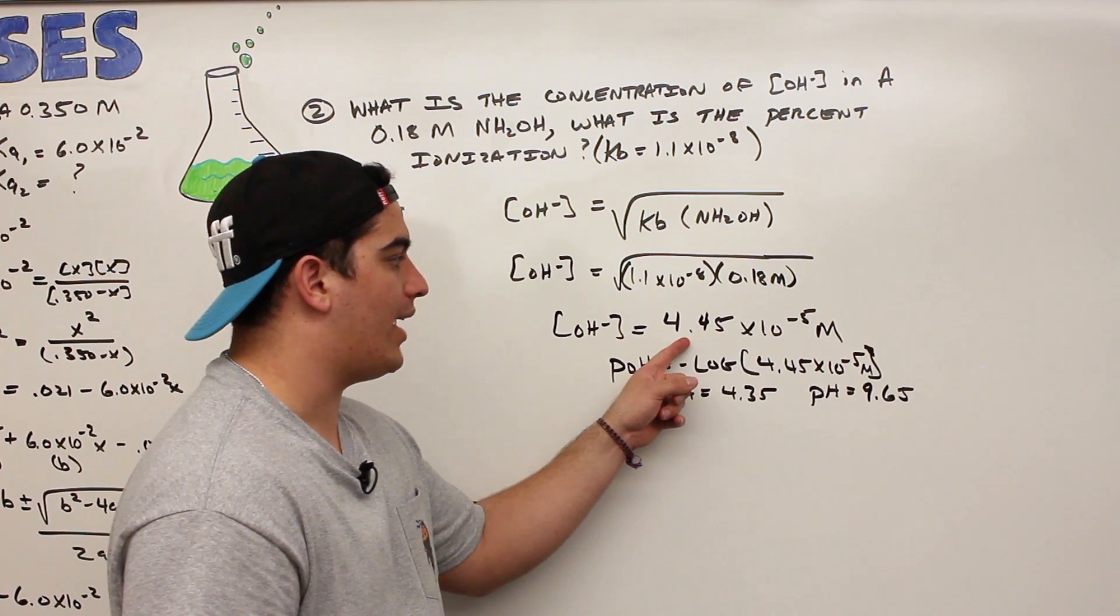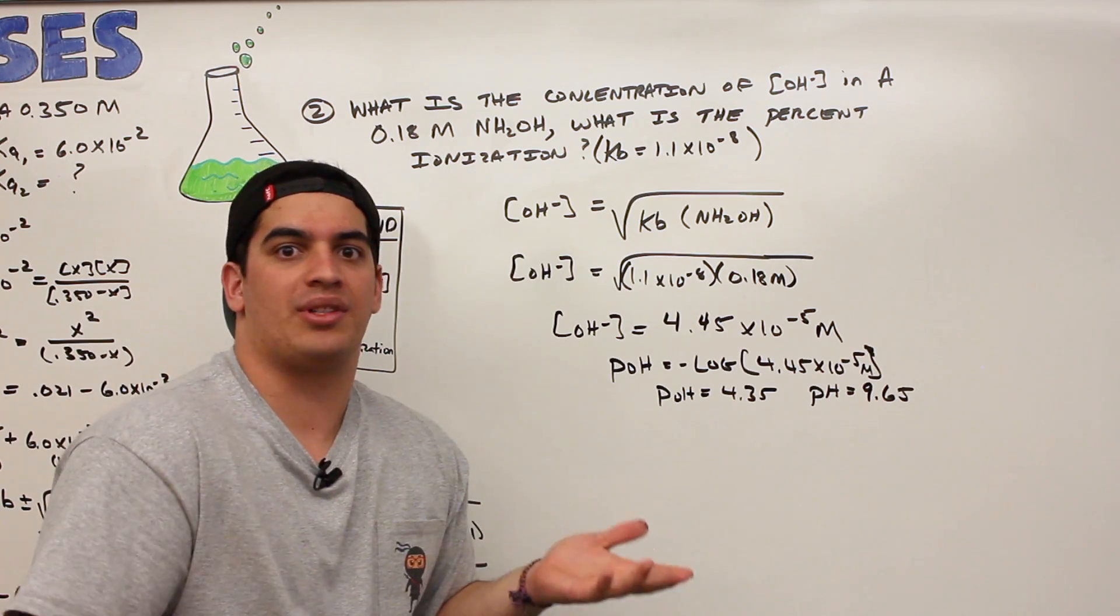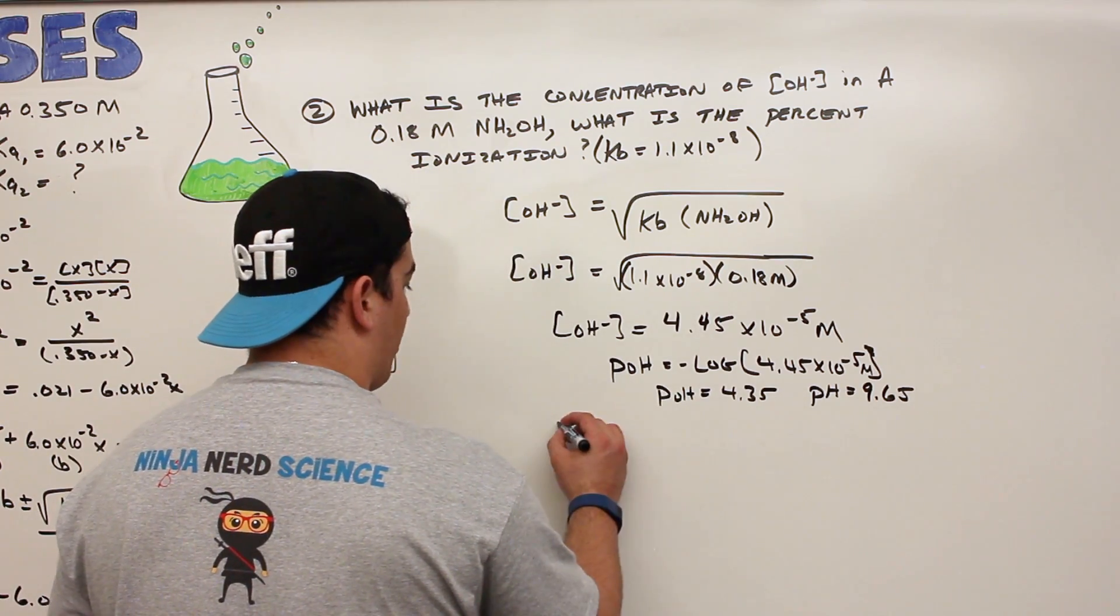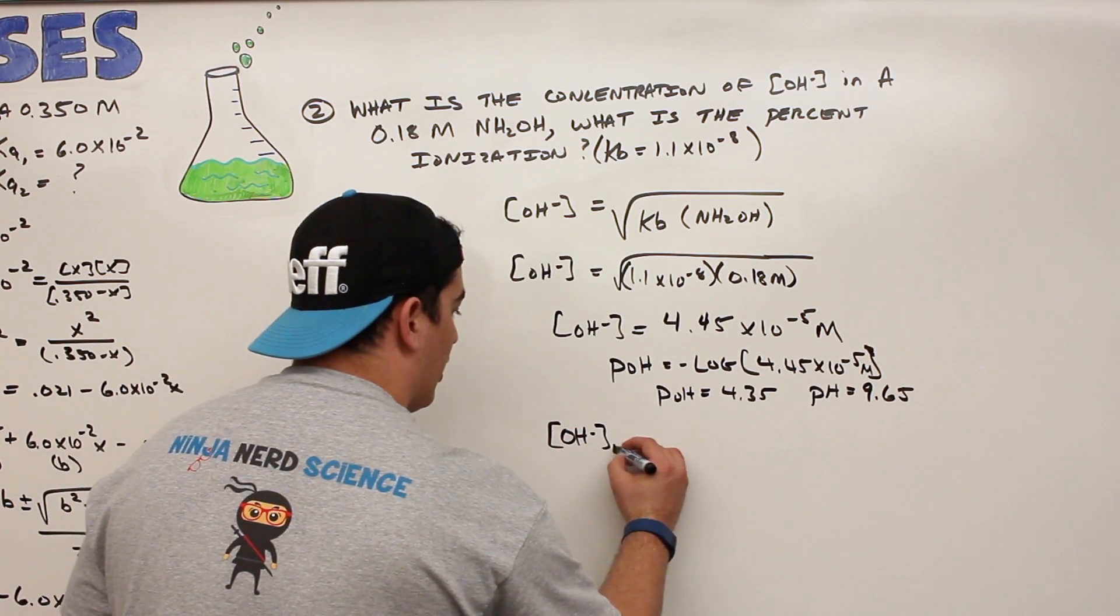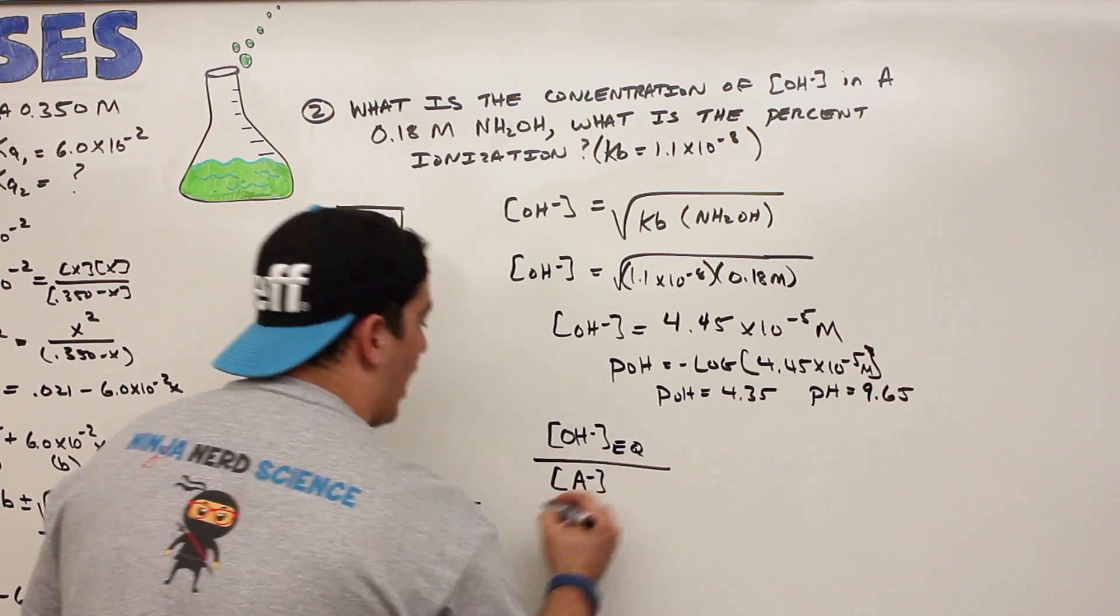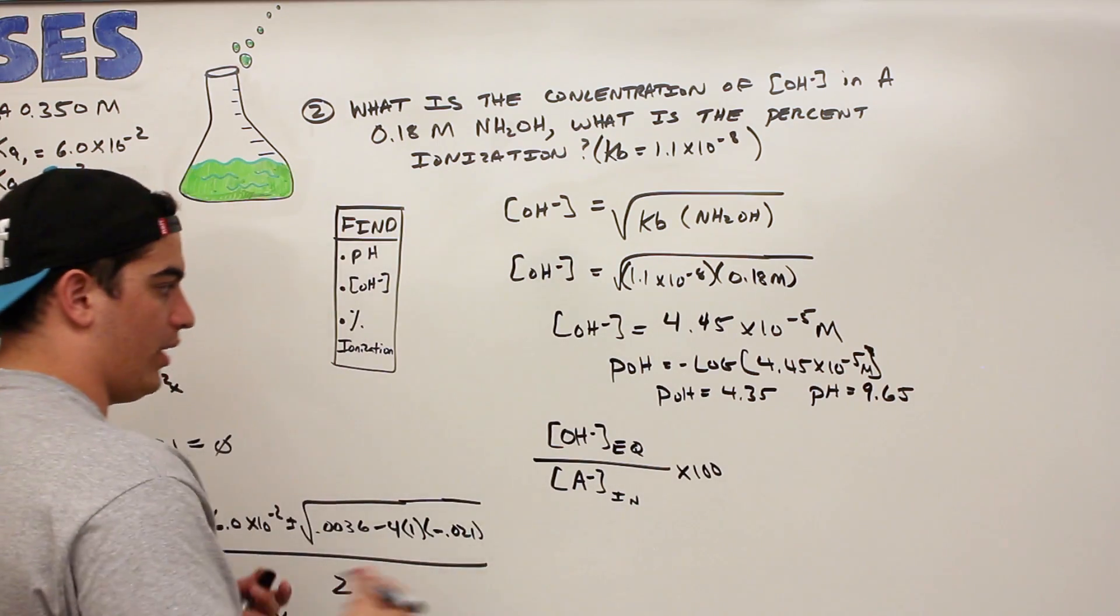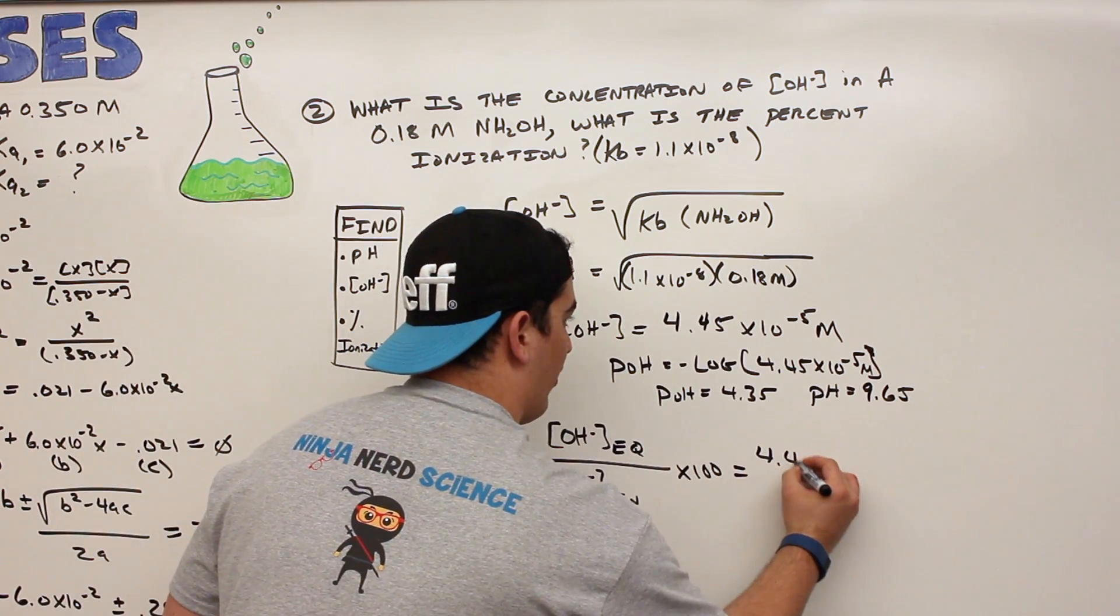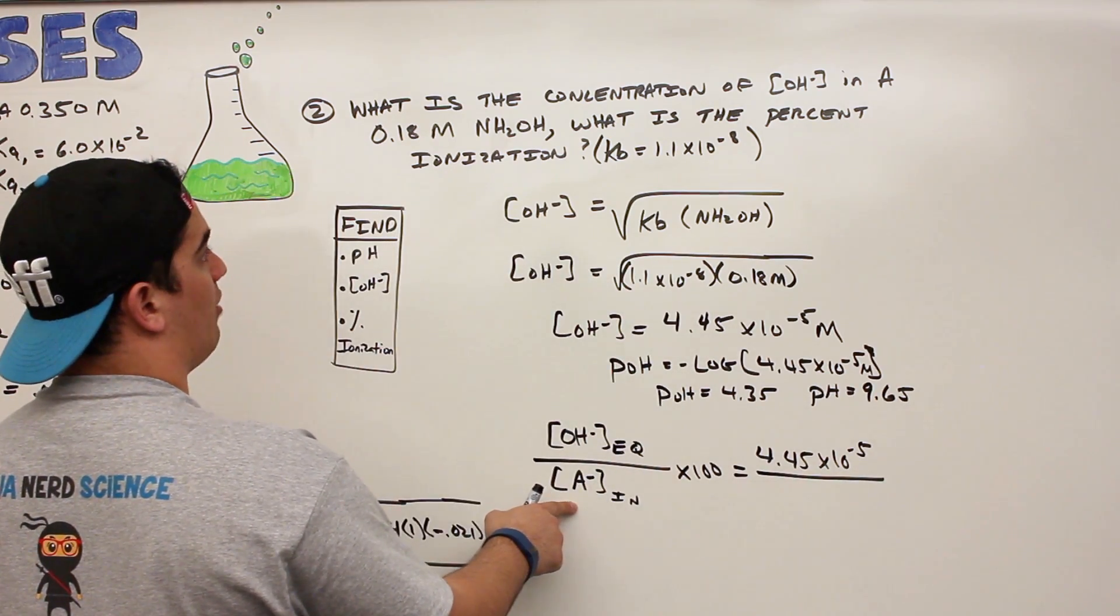All right, now how do I know that that hydroxide ion concentration is the right answer? Here's how I have to do it. I'm going to do that 5% rule that I've been teaching you guys over and over again. It's the percent ionization. So percent ionization, the formula actually is written like this. Usually it could be for acid or for base. So for a base in this case, I do the hydroxide ion concentration at equilibrium over the initial concentration of my weak base times 100. So what is this then? Let's write it in here. OH concentration at equilibrium is 4.45 times 10 to the minus 5 over the initial concentration of my weak base, which is 0.18 molar.